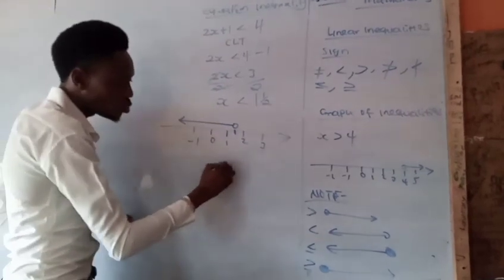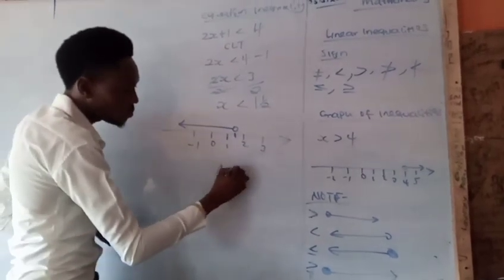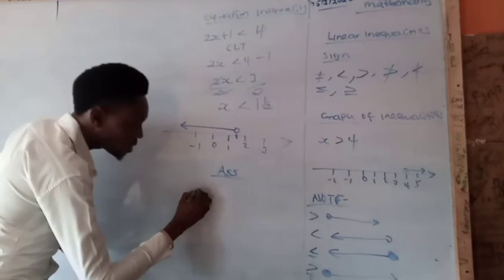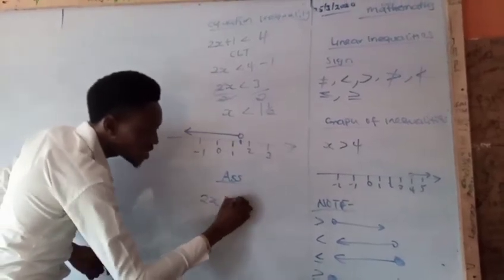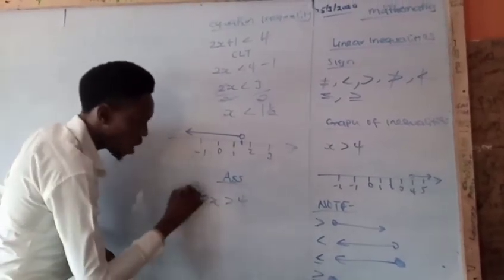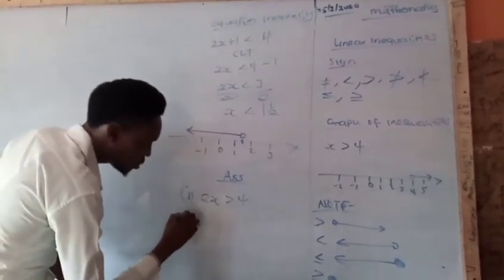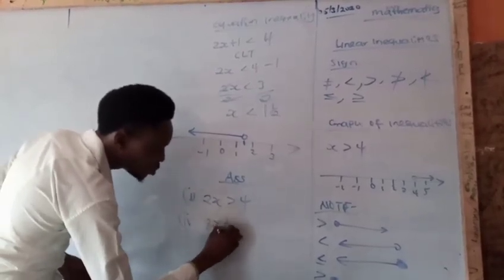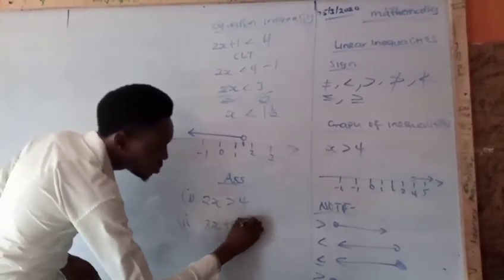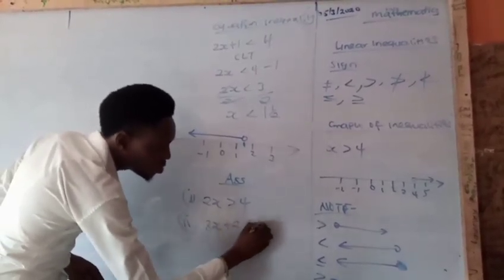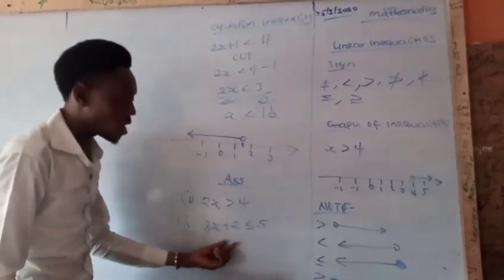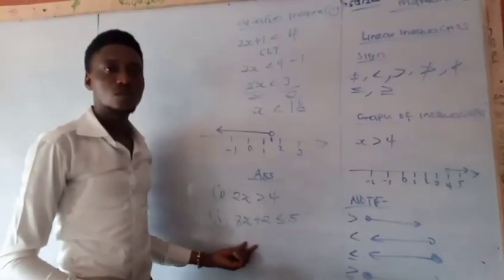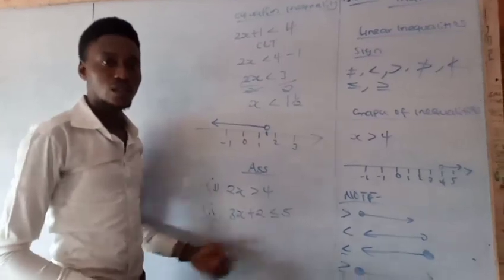I want all students to try the following exercises: number one, 2s is greater than 4; number two, 3s plus 2 less than or equal to 5. Please try all these. Thank you very much — we continue in the next class.